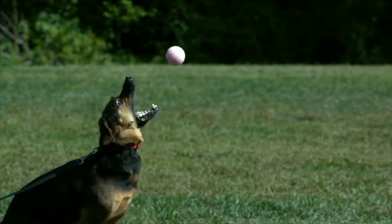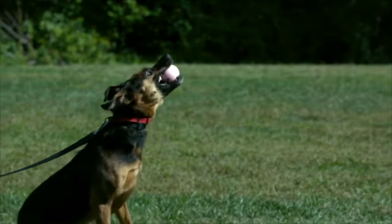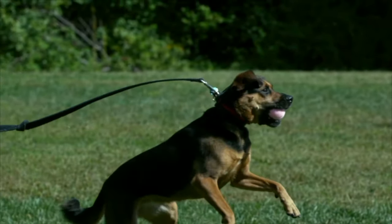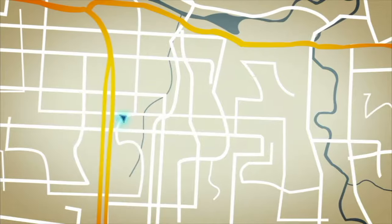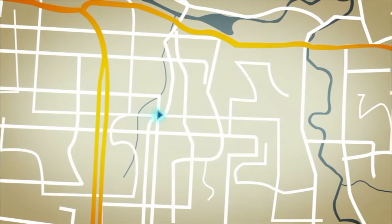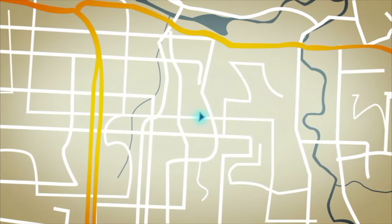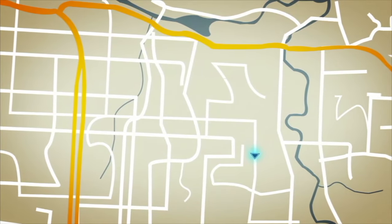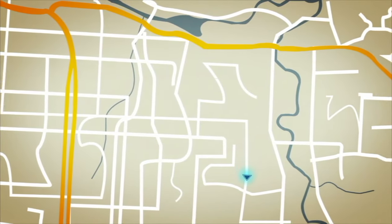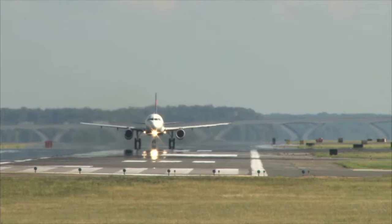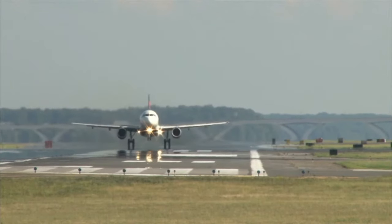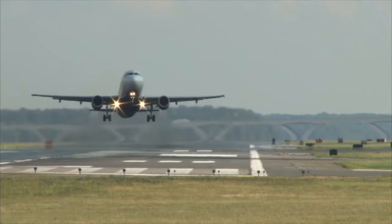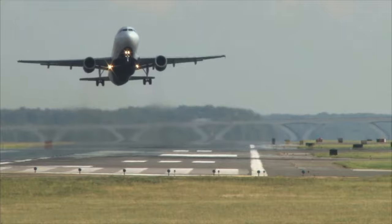A ball flying through the air can be described by both its speed and direction. If you know the velocity of an object, you can determine its exact location and motion at any point in time. A pilot relies on velocity calculations to know exactly where their plane is headed and how fast it is flying.